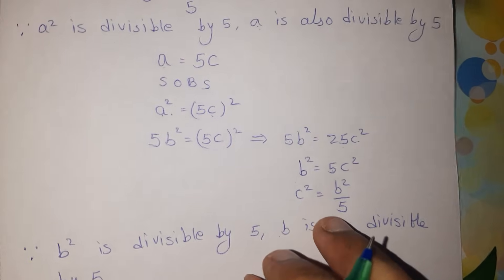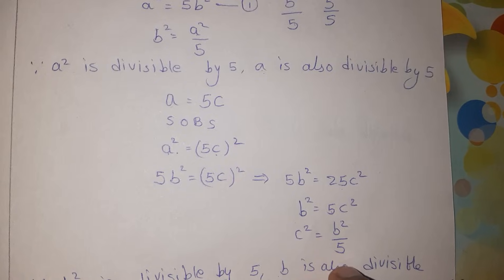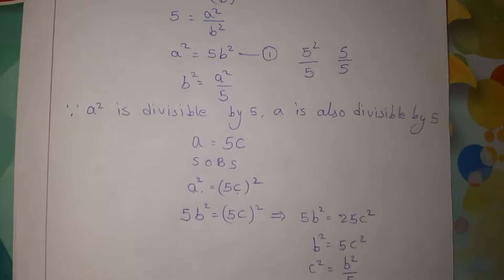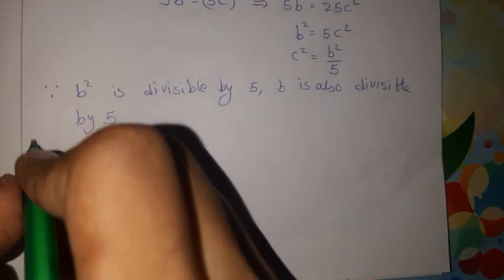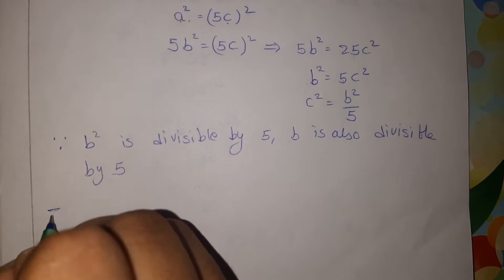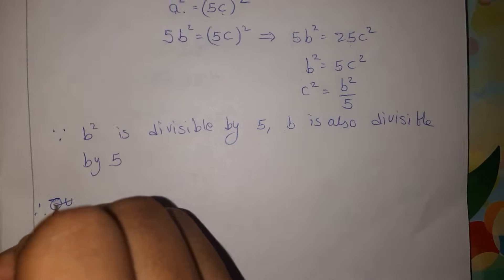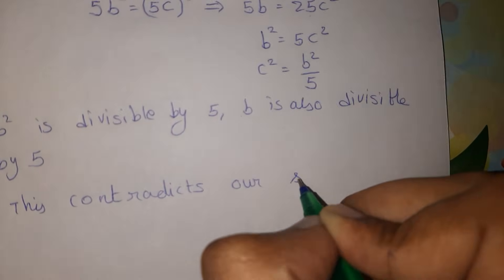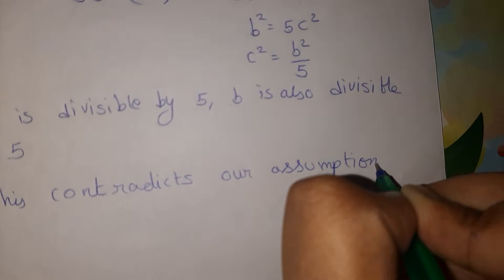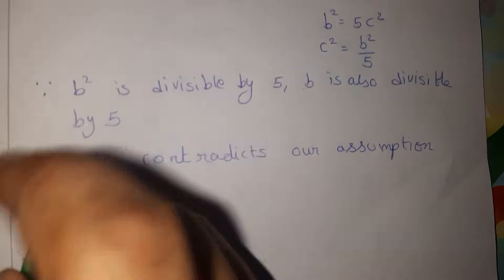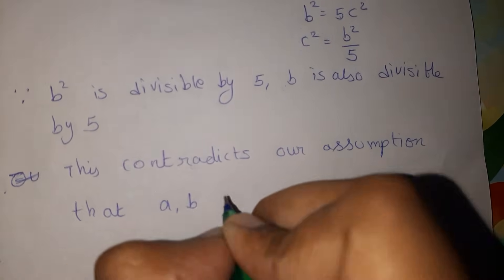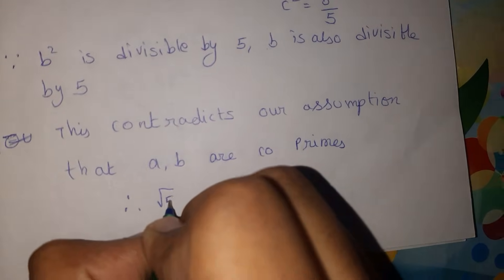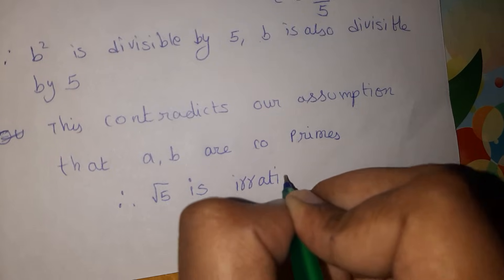But we have the assumption that a and b are co-prime with no common factor. Here both a and b are divisible by 5, which contradicts our assumption that root 5 is rational.